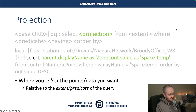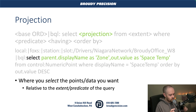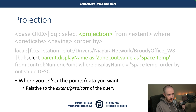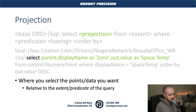Next is our projection. This is where we're selecting what we want to have in our columns of the query or the return of the query. In this case, I'm looking for the zone, which is the parent dot display name of the space temps that I've found, and then I'm also going to output the out dot value of our space temp and call that space temp. The syntax here allows us to define a custom name — the "as zone" and "as space temp" are what define our column names on the returned results of the query.